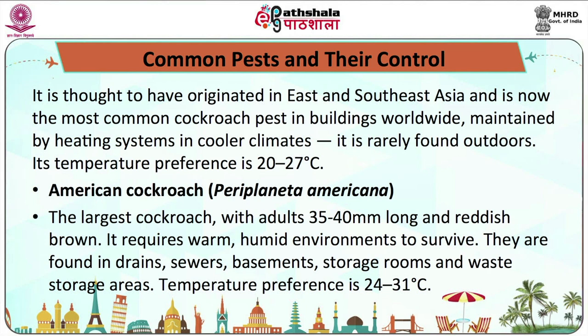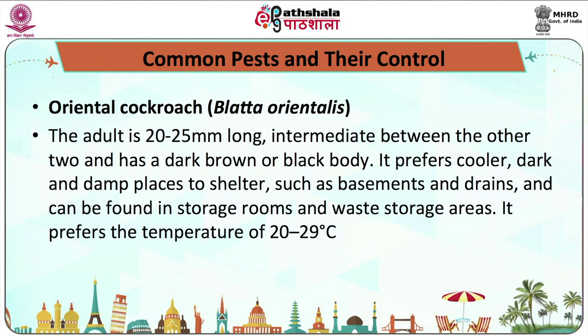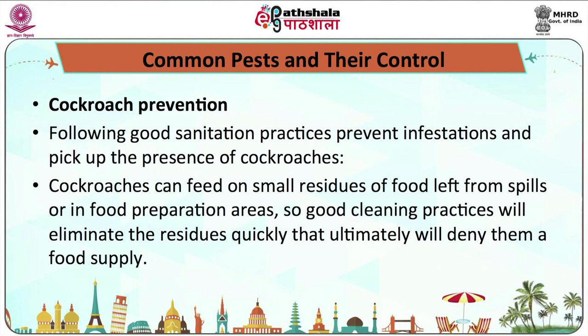The American cockroach is the largest cockroach — adults range from 35 to 40 mm long and are reddish brown. It requires warm, humid environments to survive. They are found in drains, sewers, basements, storage rooms, and waste storage areas. The temperature preference is 24 to 31 degrees centigrade. Oriental cockroaches are around 20 to 25 mm long — intermediate between the two — with a dark brown or black body. They prefer cooler, darker, and damp places to shelter such as basements, drains, and can also be found in storage and waste storage areas. Their preferred temperature is 20 to 29 degrees.